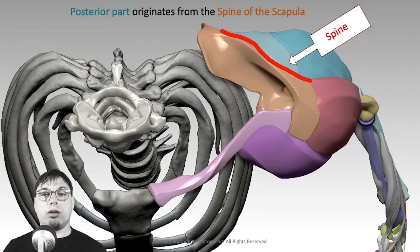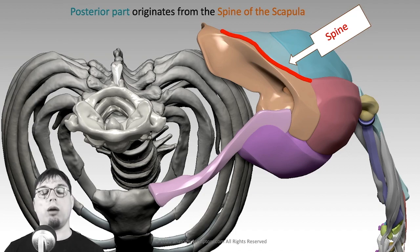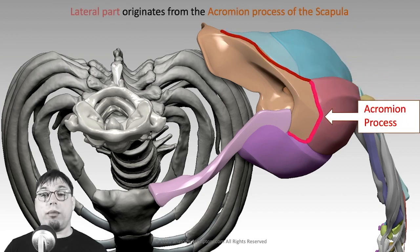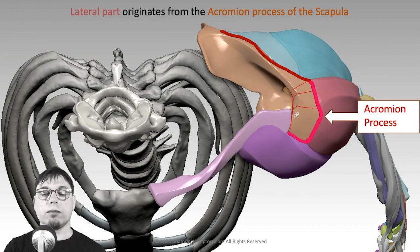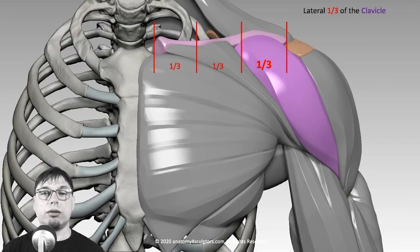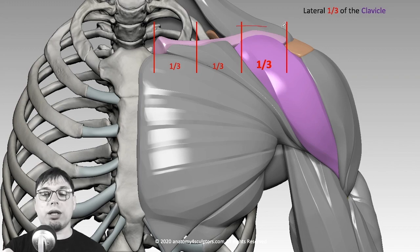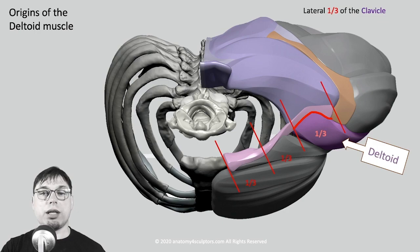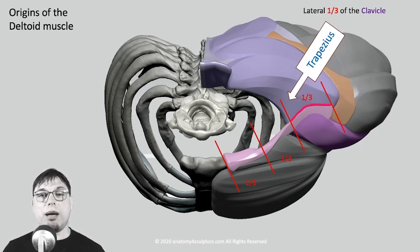The posterior part of the deltoid originates from the spine of the scapula — the long bony landmark on the back side. The lateral or middle part originates from the acromion process, the square part of the scapula. The front part of the deltoid originates from the lateral third of the clavicle — dividing the clavicle into three imaginary parts, it attaches at the distal end.